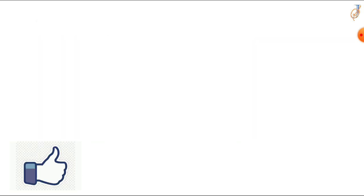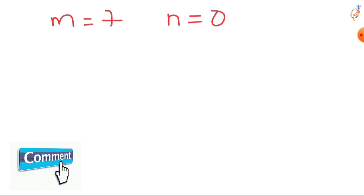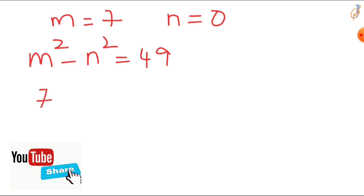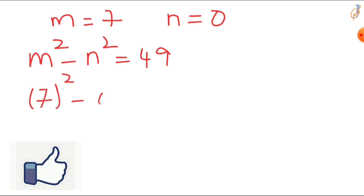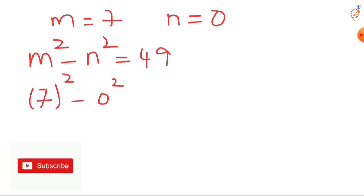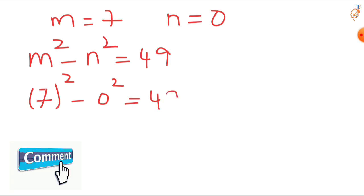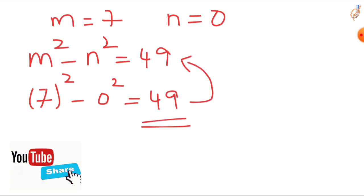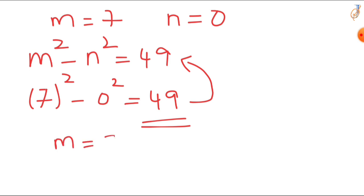Now check m = 7 and n = 0: LHS is 7 squared minus 0 squared. 7 squared is 49, and 49 minus 0 is 49, which equals our RHS. So this pair also satisfies the equation. Therefore m values are 25 and 7, and n values are 24 and 0.